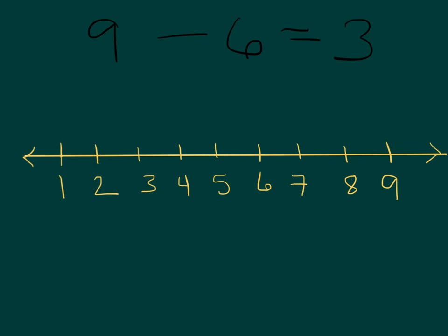Because on a number line, a nine is located here, a six is located here, and the difference between them, the space between, right here, is three.